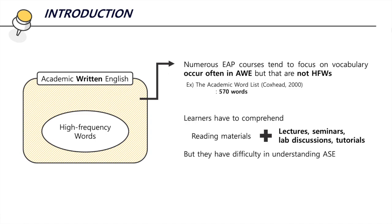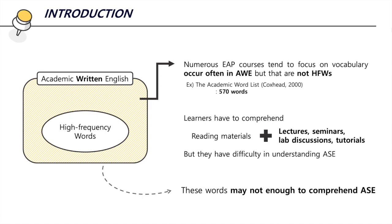However, students have to understand both reading materials and academic spoken English such as lectures, seminars, lab discussions, and tutorials, but they have difficulty in understanding academic spoken English, and the main reason is lack of vocabulary knowledge. This indicates that words in academic written English outside of high frequency words are not enough to comprehend academic spoken English.